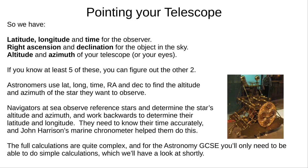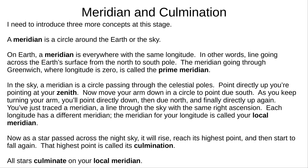The full maths for the calculations involved are very complex and beyond GCSE level. We'll have a look at the simpler maths that you need shortly. Before we go any further, we need to understand three more concepts. The meridian is a circle all the way around the Earth or the sky. On Earth, a meridian is a line of equal longitude — a line across the Earth's surface from pole to pole.